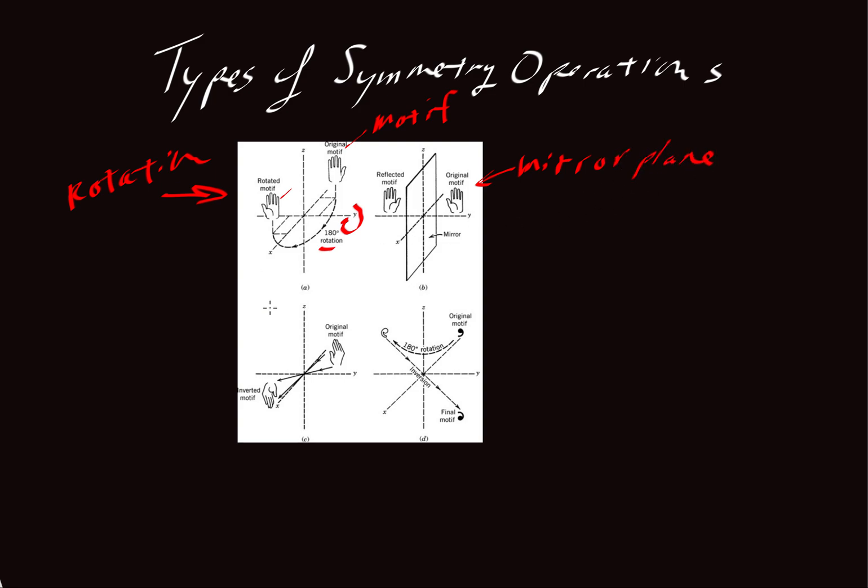Another type of symmetry operation. Then we have an inversion. And with the inversion we have a point. And in this case the way this works is we'll take the tip of the hand, maybe the tips of the fingers there, and we'll project them through that point to get the tips of the fingers down here. And over here we'll take the wrist and project the wrist through that point to get the wrist over here. And then we'll take the thumb, project it through that point to get the thumb, etc. And so we get an inversion operation.